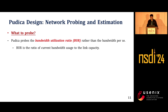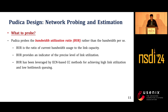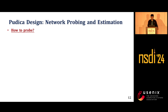So what is BR? BR is defined as the ratio of current bandwidth usage to the link capacity. BR provides an indicator of the precise level of link utilization. BR has been leveraged by in-network methods for achieving high link utilization and low queuing. However, its potential has not been fully explored by end-to-end approaches. The main question is how to estimate BR.